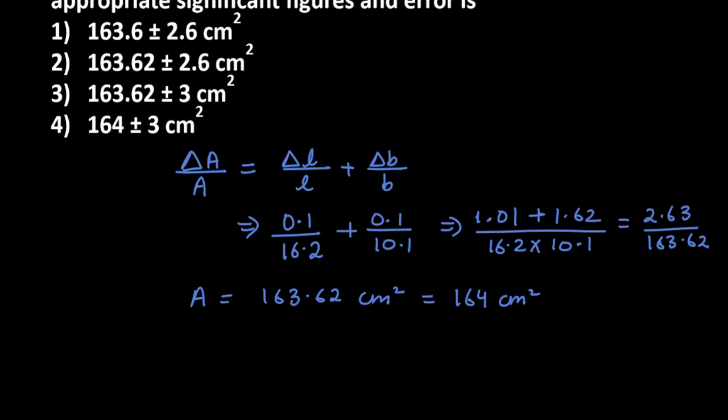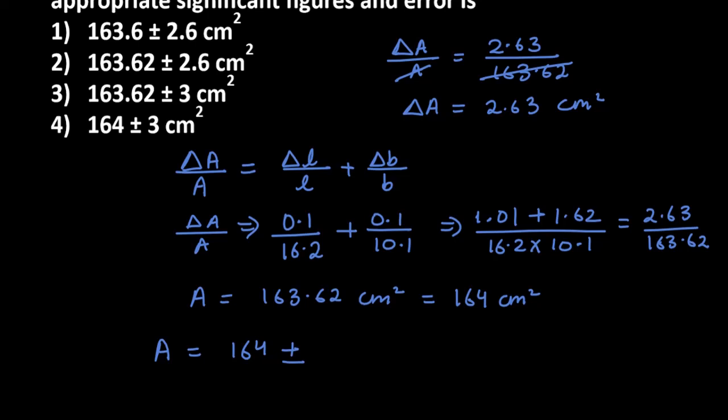We'll find del A. Del A over A is equal to this part. We'll substitute the values. Del A is calculated from the ratio 2.63 over 163.62, which gives us the error value.